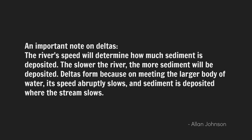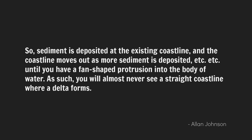An important note on deltas: river speed determines how much sediment is deposited — the slower the river, the more sediment. Deltas form because on meeting a larger body of water, the river's speed abruptly slows and sediment is deposited where the stream slows. The sediment is deposited at the existing coastline, and the coastline moves out as more sediment accumulates, until you have a fan-shaped protrusion into the body of water. As such, you will almost never see a straight coastline where a delta forms. This is something that should have been in the original video — but yes, if you have a delta you're almost always going to have some sort of protrusion coming out.